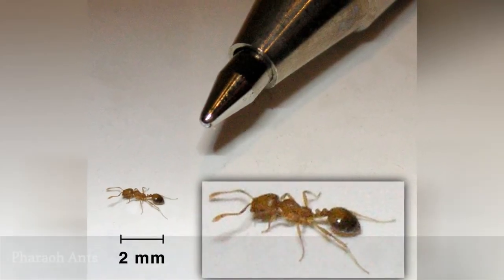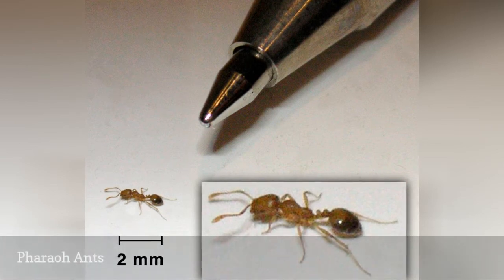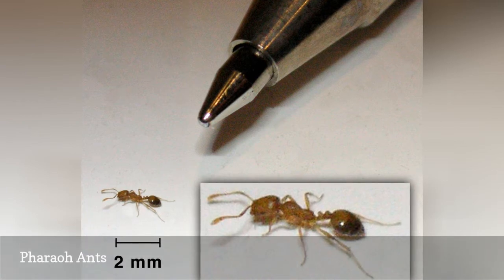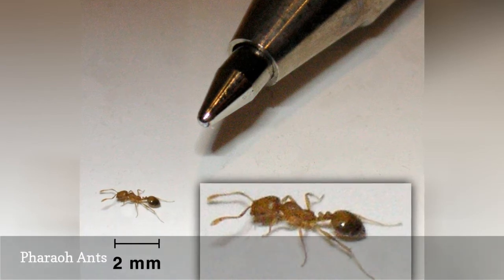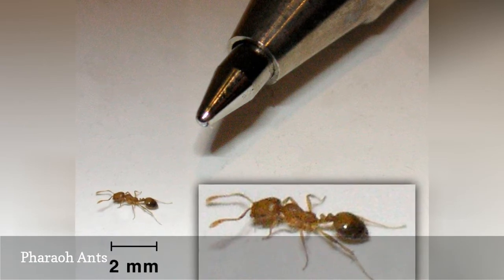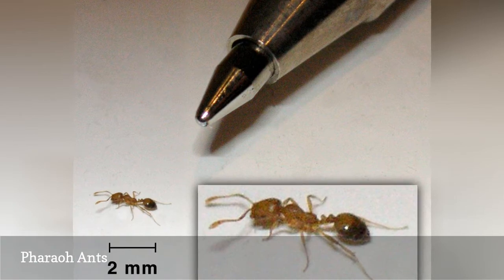Pharaoh ant colonies can get extremely large and include many nests. A single colony can have a single or multiple queens, with populations numbering in the several thousand. This ant expands its colony and creates new ones through budding — a queen and accompanying workers leave the current ant nest and walk to a new site to start a new colony. When controlling Pharaoh ants,